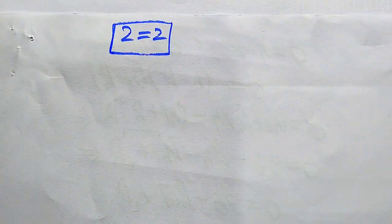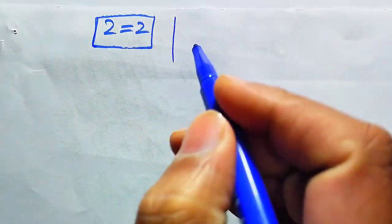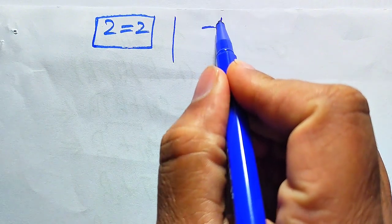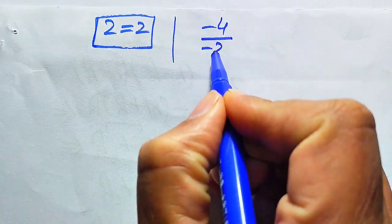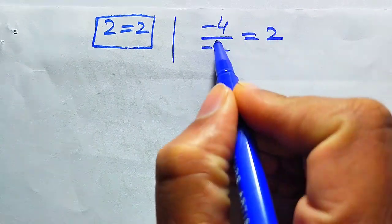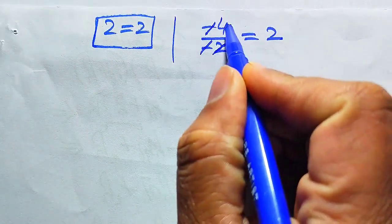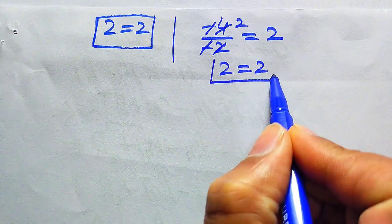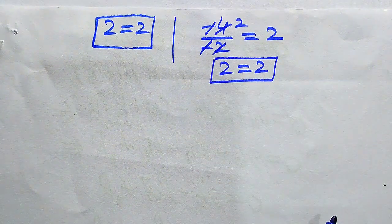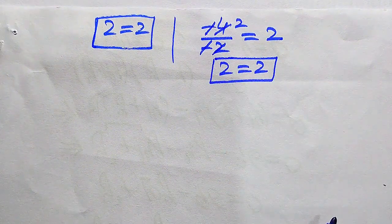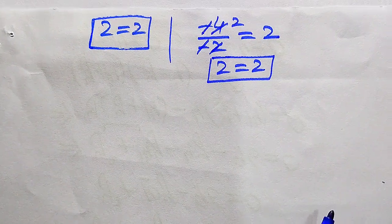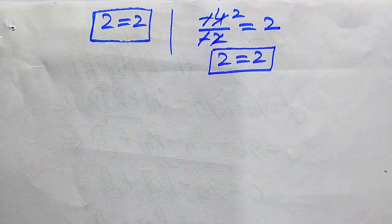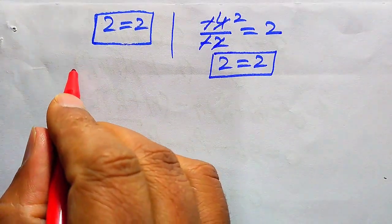We obtain −8 + 4 = −4 divided by −2, which equals 2. The negatives cancel and we get 2 = 2. This shows both sides are equal, confirming that x = −2 also satisfies the given equation.